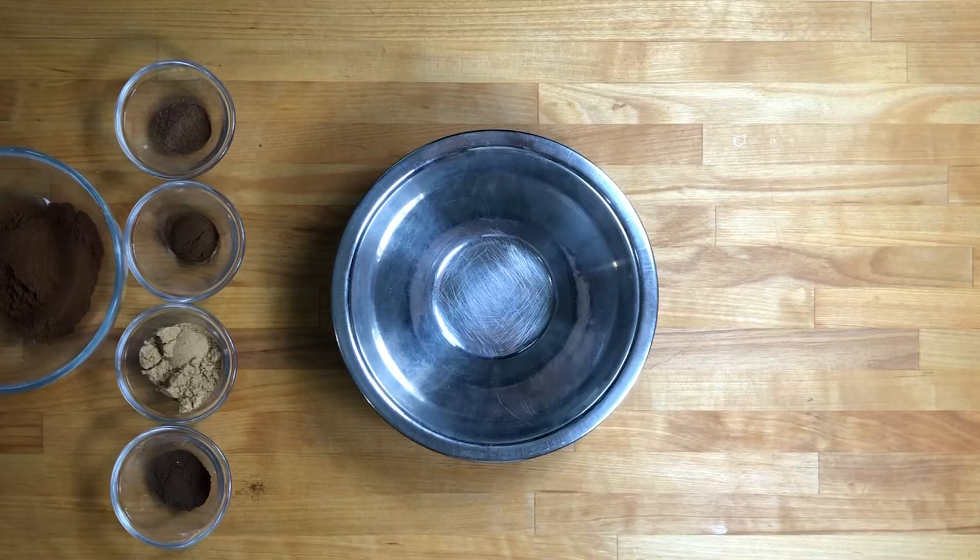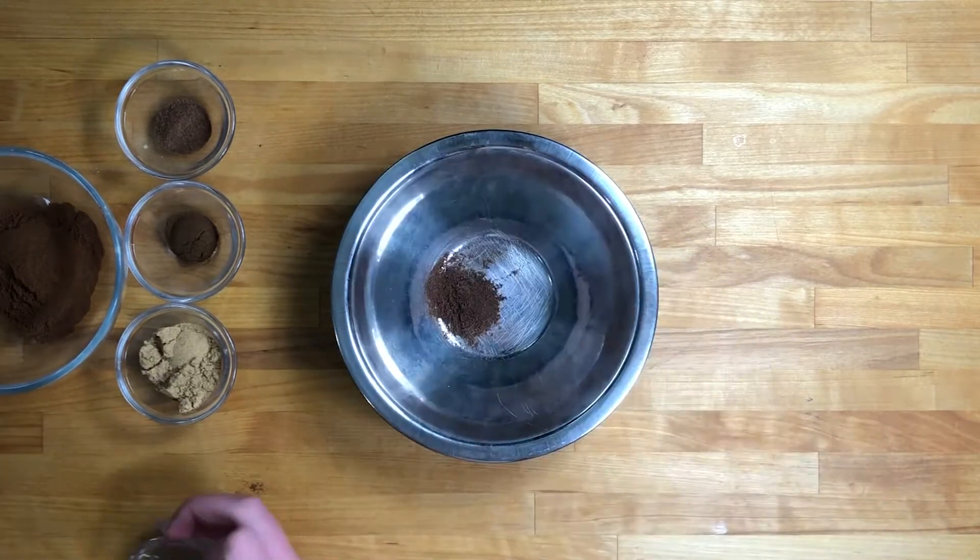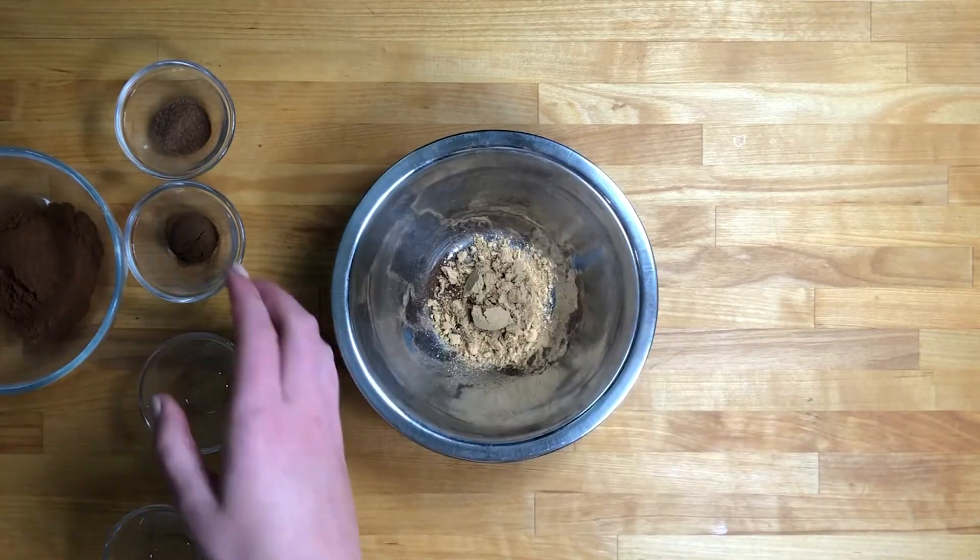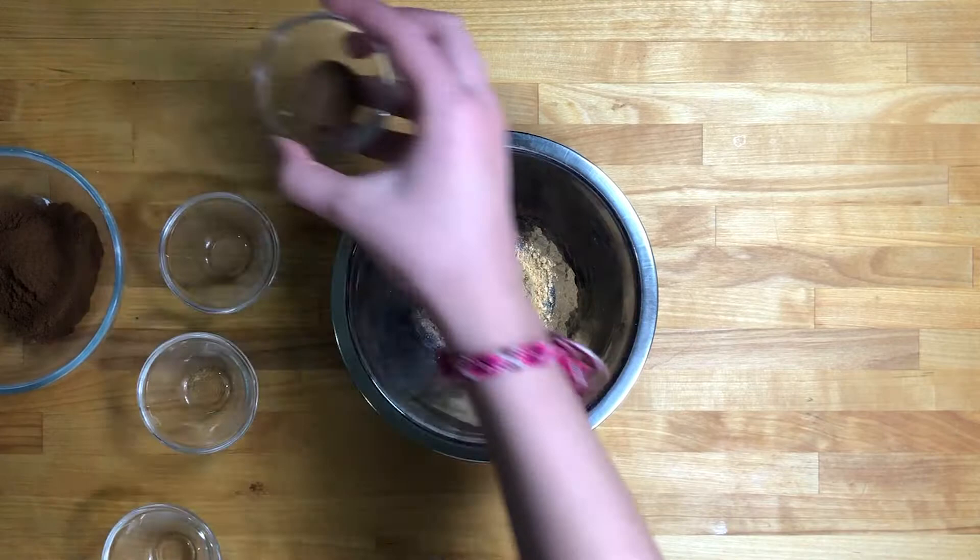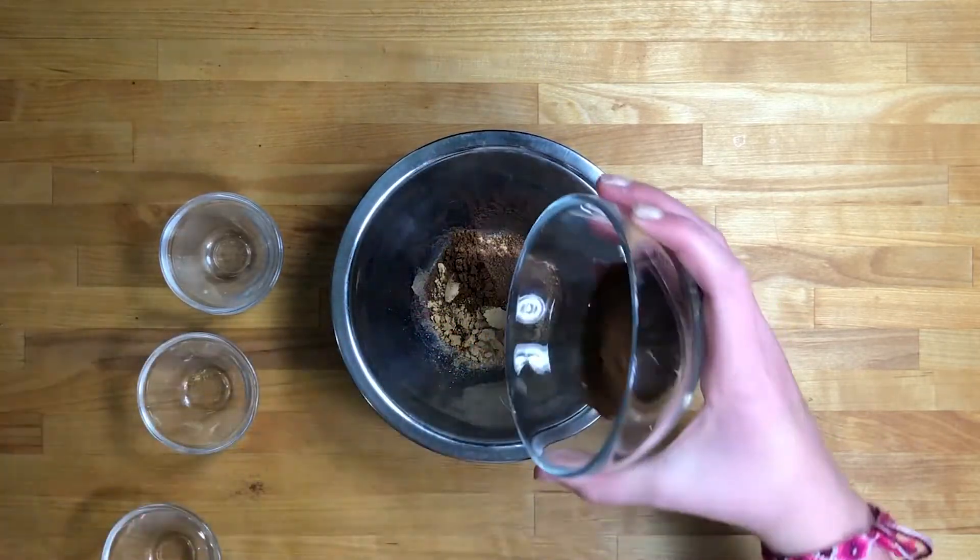Pumpkin spice is pretty easy. We just need to mix up five spices. We're going to start off with nutmeg, followed by ginger, ground cloves, allspice, and finally ground cinnamon.